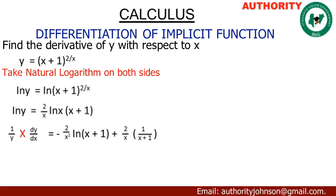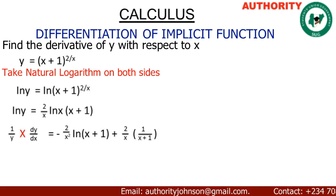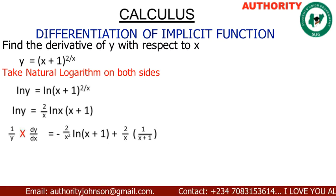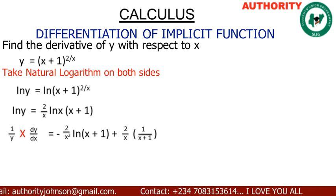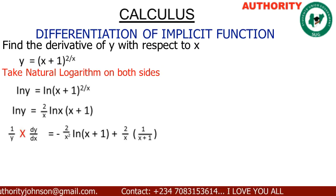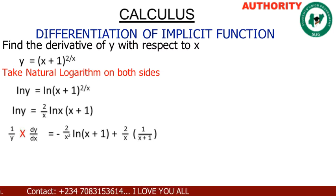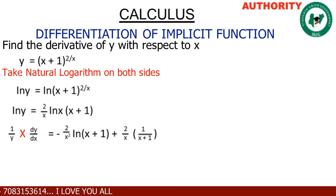Plus the differentiation of ln(x+1), which gives us 1/(x+1), times (2/x). So we have: (1/y) · dy/dx = −(2/x²)·ln(x+1) + (2/x)·[1/(x+1)].